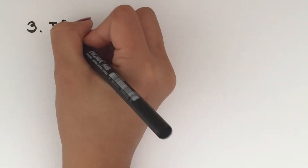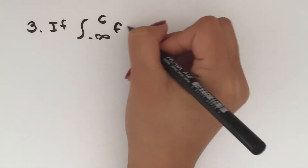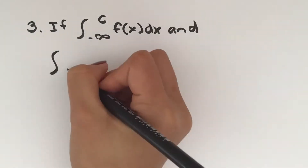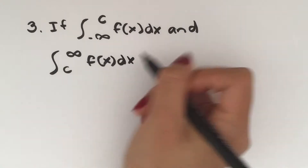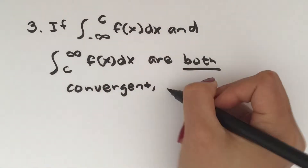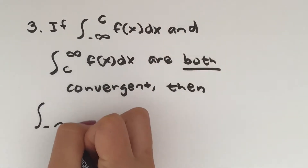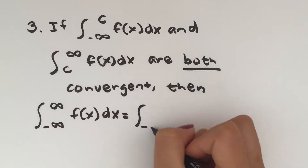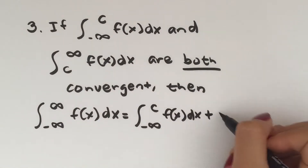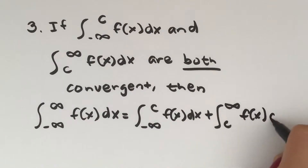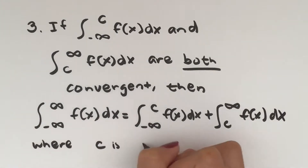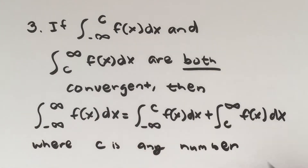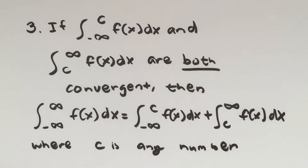The third case is that if the integral from negative infinity to c of f dx and the integral from c to infinity of f dx are both convergent, then the integral from negative infinity to infinity of f dx equals the integral from negative infinity to c of f dx plus the integral from c to infinity of f dx, where c is any number. This requires both integrals to be convergent. If either one is divergent, then so is the whole integral.